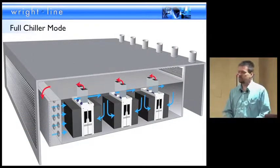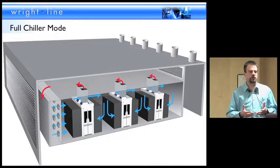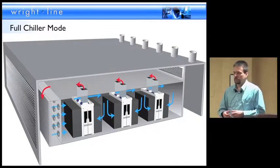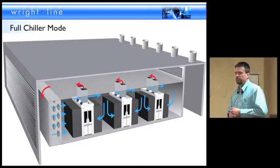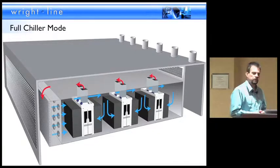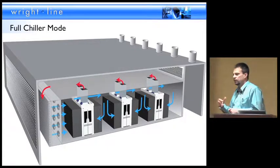They also have the capability to go into full chiller mode. In the east wall are actual coil units with fans. They can close off the building if it's not a free cooling day and cycle all that waste heat back through their coils, cool it off, resupply the data center, and be completely isolated.